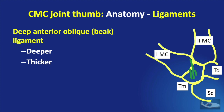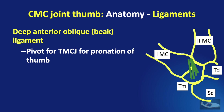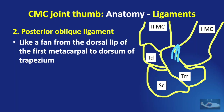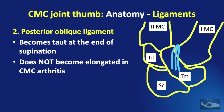The deep part, otherwise known as the beak ligament, is deeper and thicker. It forms a pivot for the trapezio-metacarpal joint for pronation of the thumb. The posterior oblique ligament fans from the dorsal lip of the first metacarpal to the dorsal aspect of the trapezium. It becomes taut at the end of supination and does not become elongated in carpometacarpal joint arthritis.